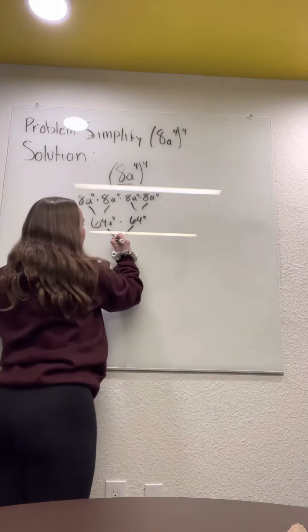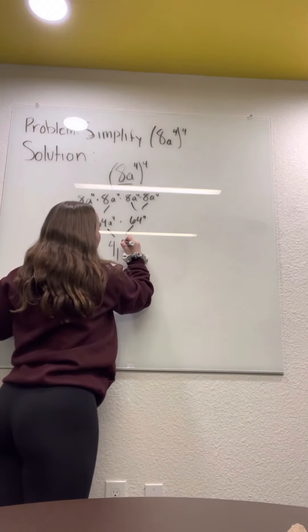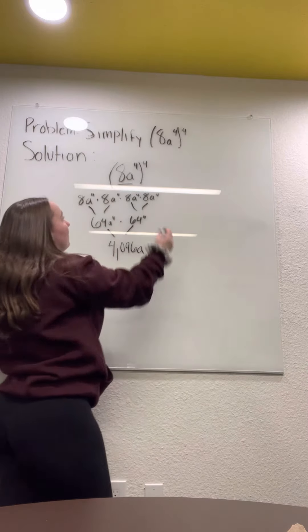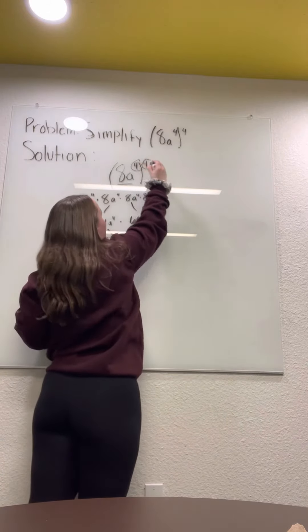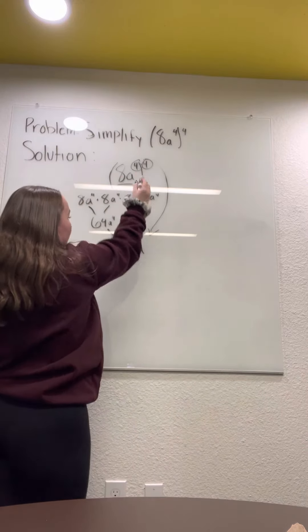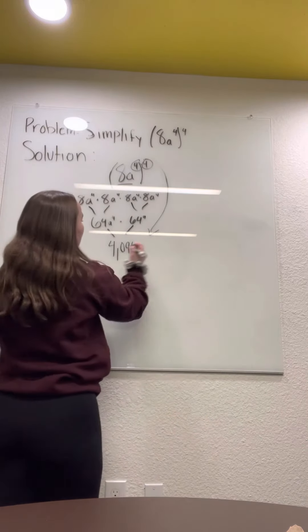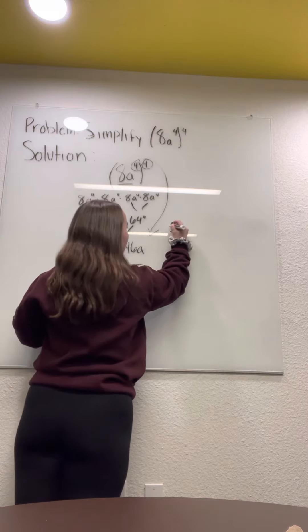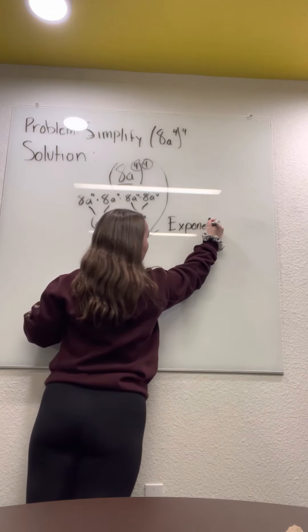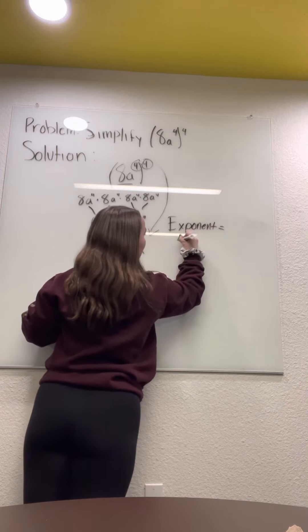But now we need to take these and put it to this exponent. So we're going to take the 4 and the 4 and we're going to times those. So 4, let me write exponent equals 4 times 4.